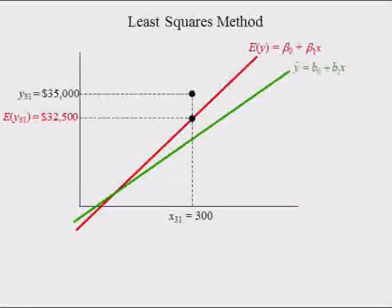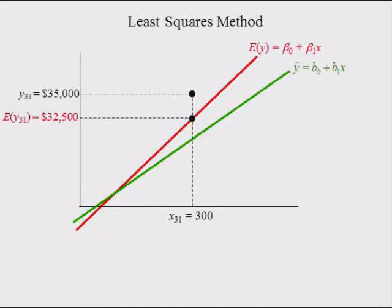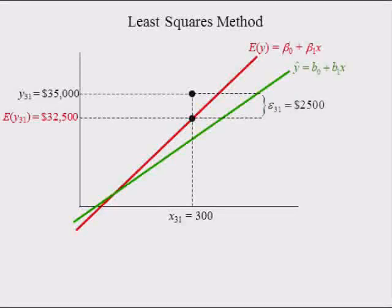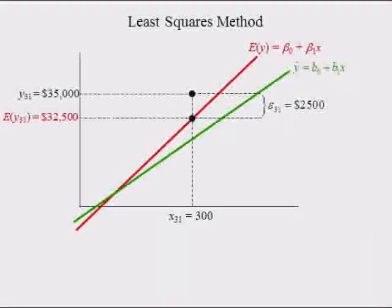In practice, we will never know the expected y for the 31st observation—say $32,500—because we don't know beta 0 and beta 1. The difference between the observed price of the 31st car and the expected value of cars with 300 horsepower is called the 31st error term, which equals $2,500 in this example. Because we don't know beta 0 and beta 1, this error term is unknown.